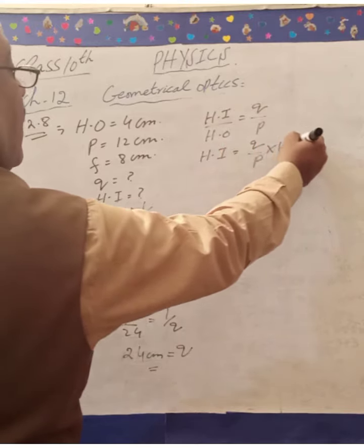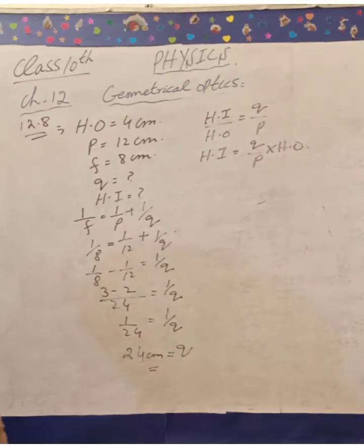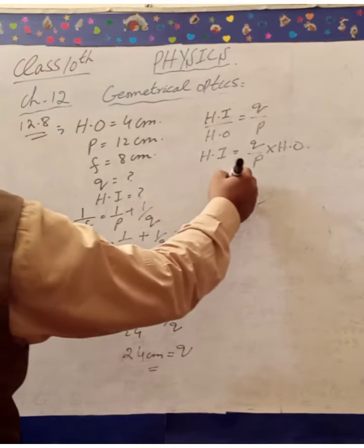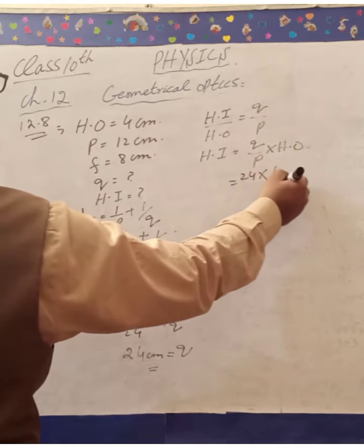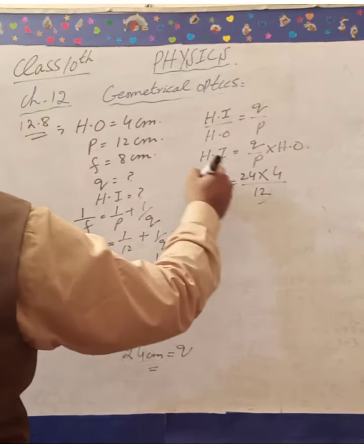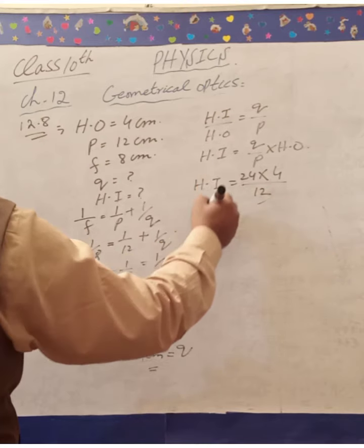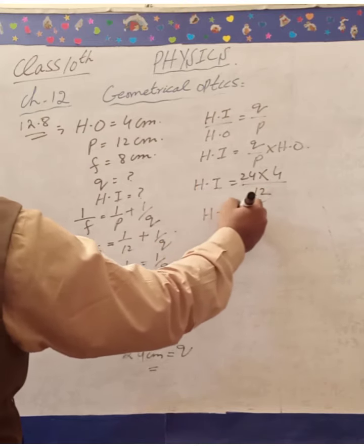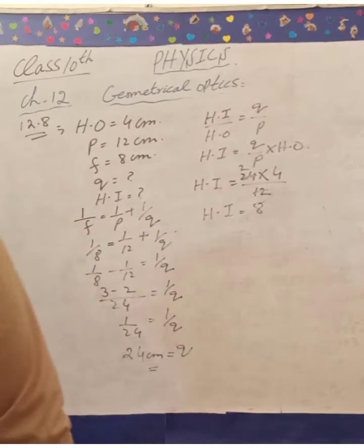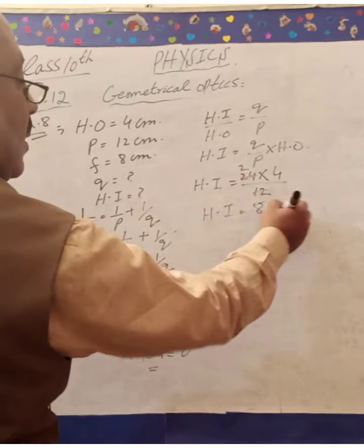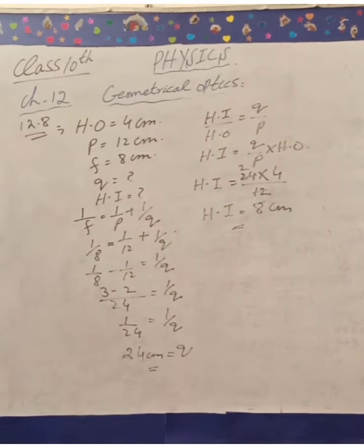Multiplying by the height of the object: Q value is 24, height of the object is 4, and P value is 12. So the height of the image equals (24/12) × 4 = 8 centimeters.